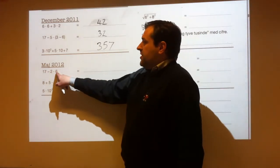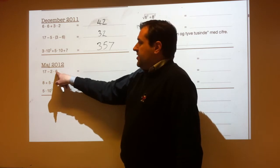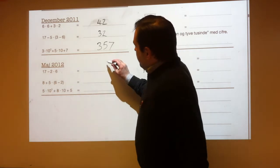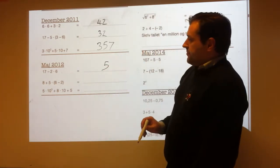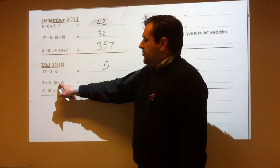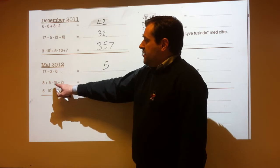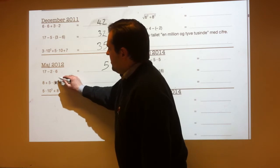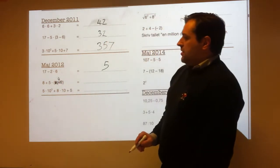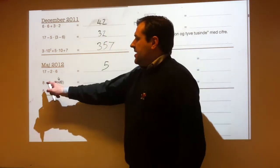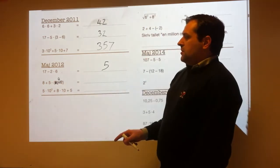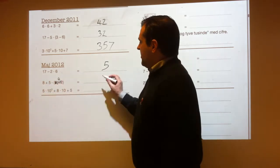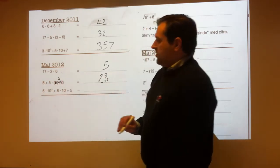Do all the multiplications first: 2 times 6 is 12. So that's 17 minus 12, which is 5. Here we've got to do the brackets first: 8 plus 5 times (6 minus 2). 6 minus 2 is 4. So that's the same as 8 plus 5 times 4. 5 times 4 is 20, so that's 8 plus 20, which is 28.